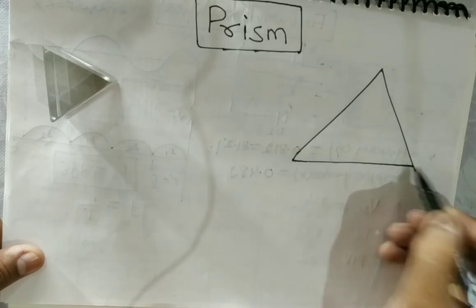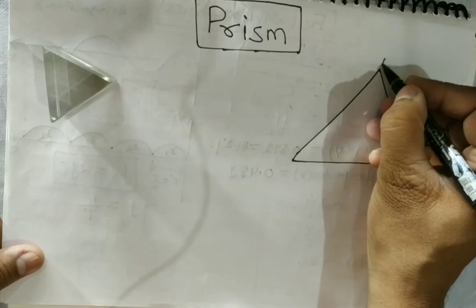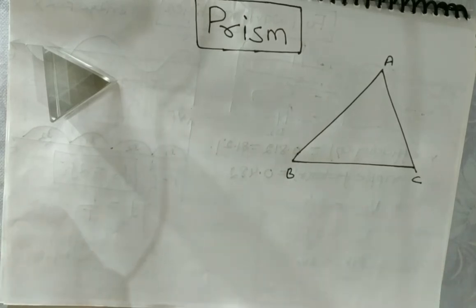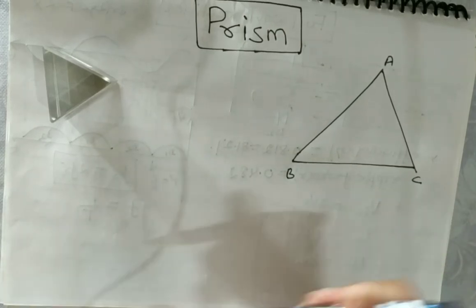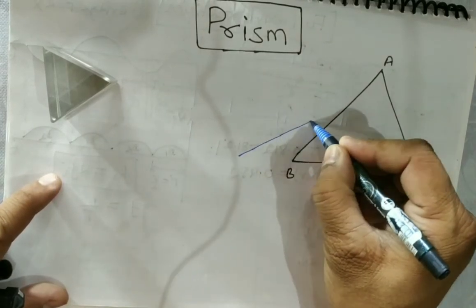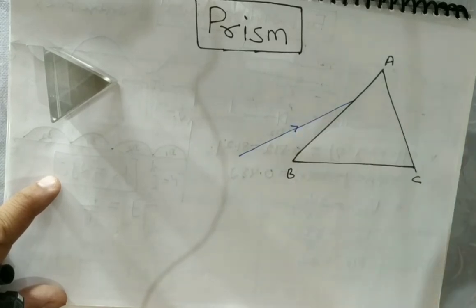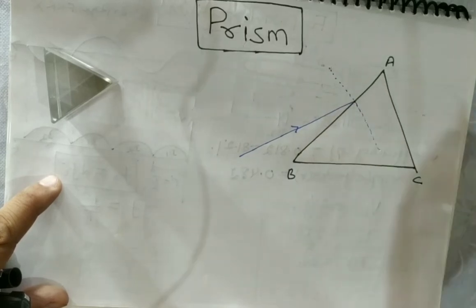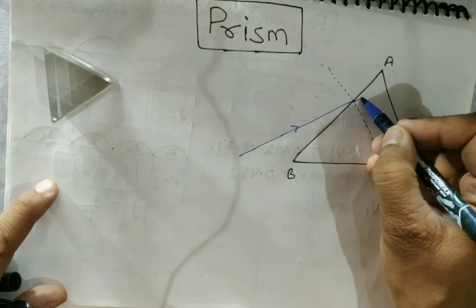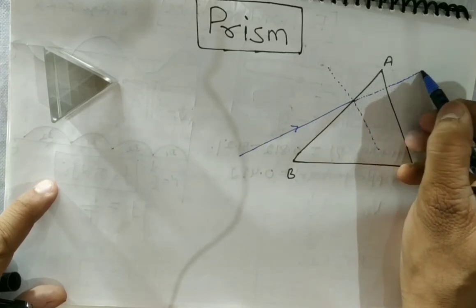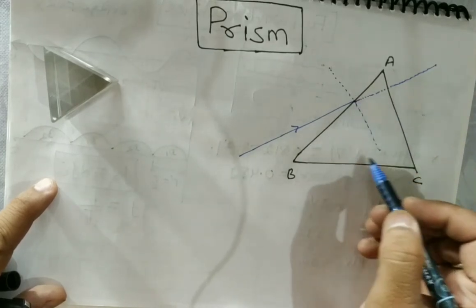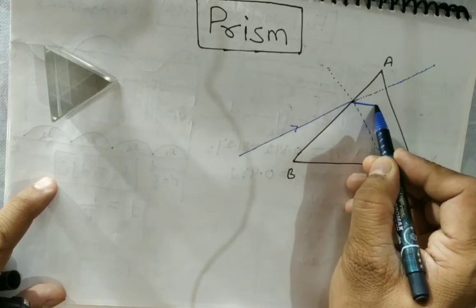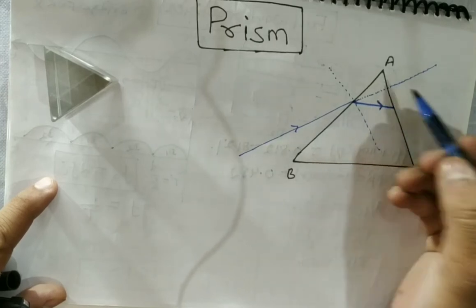I am making the diagram by hand, so please manage. A, B and C — this is a prism. Let this be the incident ray; this ray is incident on the prism. This is the normal at the point of incidence. If there was no prism, this light would go straight without deviation, but because a denser medium is present, it will bend towards the normal.